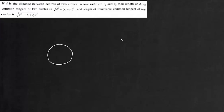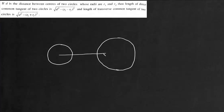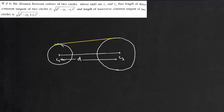So we have two circles, and first we will talk about the length of the direct common tangent. This is the line joining the centers c1 and c2, and d is the distance between the centers. We need to find this length — the length of direct common tangent AB. Now we will draw perpendiculars from the centers. This is r1 and this is r2.